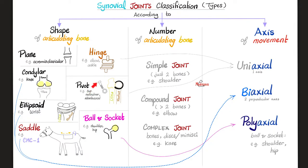Next: the pivot joint — think of a bolt rotating inside a nut, like the radius rotating near the ulna. Example: the superior radioulnar joint. Movement: rotation around a longitudinal axis. Next: the hinge joint, like a door hinge — movement occurs around a transverse axis, such as the elbow joint and the ankle joint. Next: the ellipsoid joint — a convex surface received by a concave surface, like the wrist joint — allows movement around two axes: you can flex and extend, but also adduct and abduct your wrist.